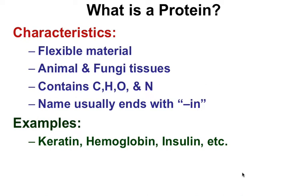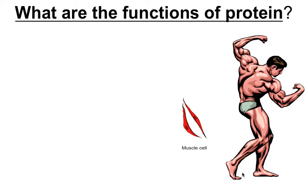Characteristics of proteins: they're usually flexible material — bones have special properties you can learn about in anatomy, but for the most part proteins are flexible. Most animal and fungi tissues are made of proteins. They contain C, H, O, and N, and their names usually end in 'in' — for example, keratin, hemoglobin (the stuff inside your red blood cells that carries oxygen), and insulin, which is associated with diabetes.